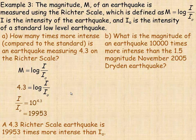And 10 to the power of 4.3 is 19,953. So a 4.3 Richter scale earthquake would be almost 20,000 times more intense than the standard low-level quake that everything is compared to.